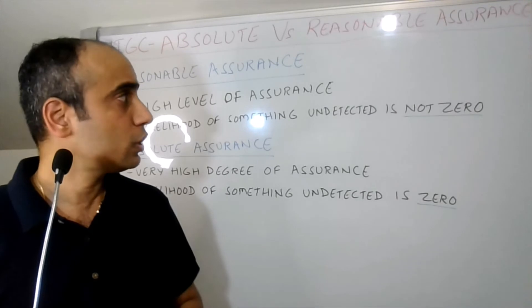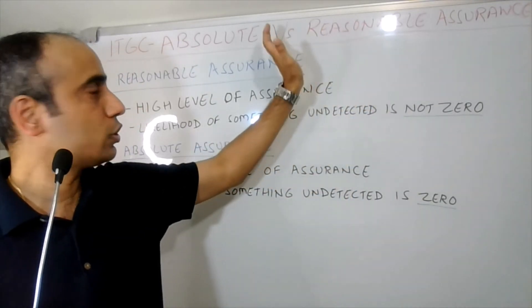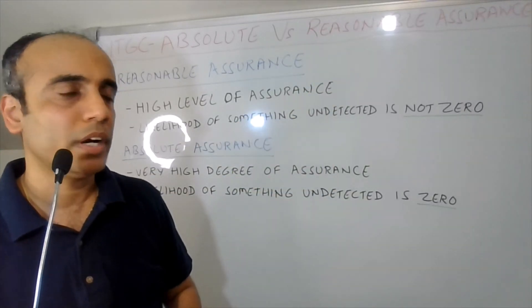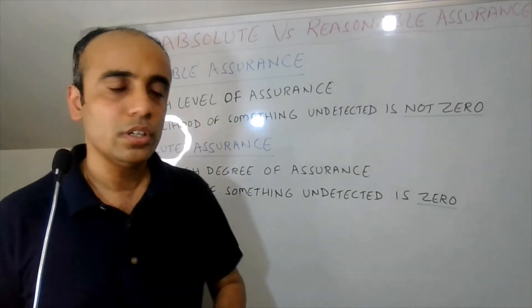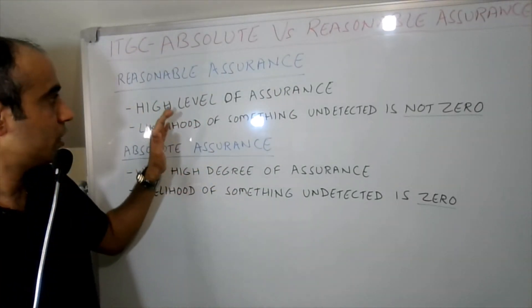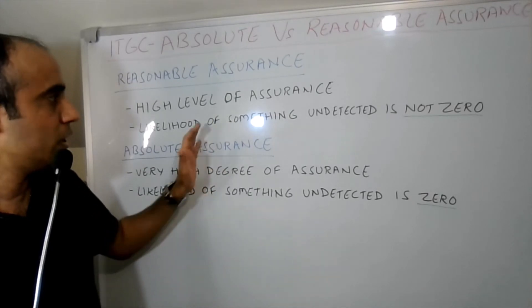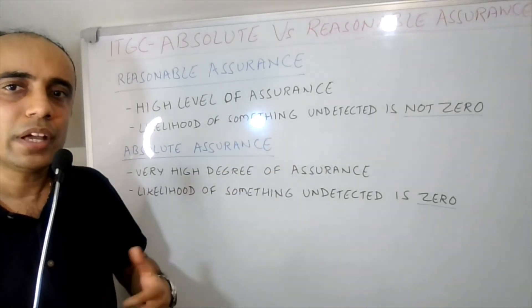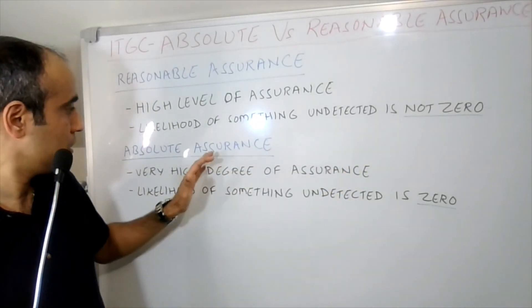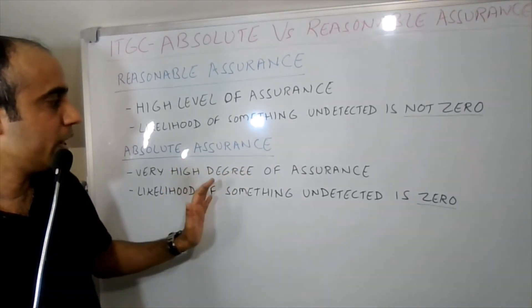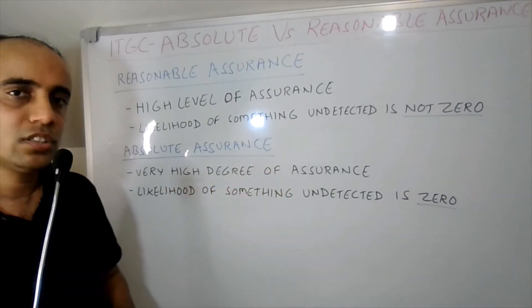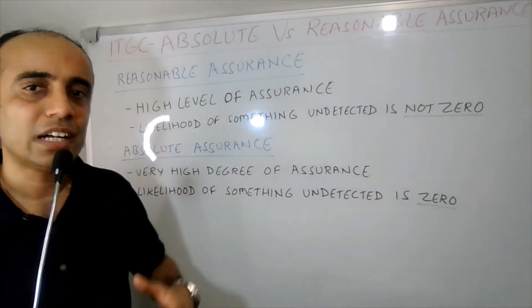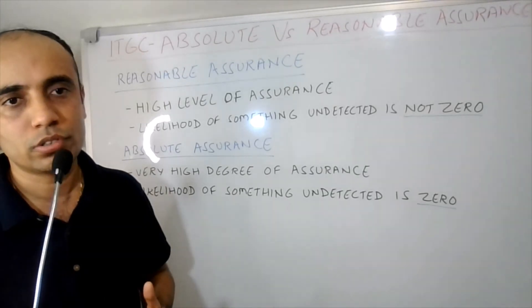Just a quick recap. We were talking about absolute versus reasonable assurance. As you can see here on the board, reasonable assurance provides high level of assurance with likelihood of something remaining undetected is not zero. Absolute assurance is a very high degree of assurance, and the likelihood of something remaining undetected is zero. That will provide you absolute or complete assurance.